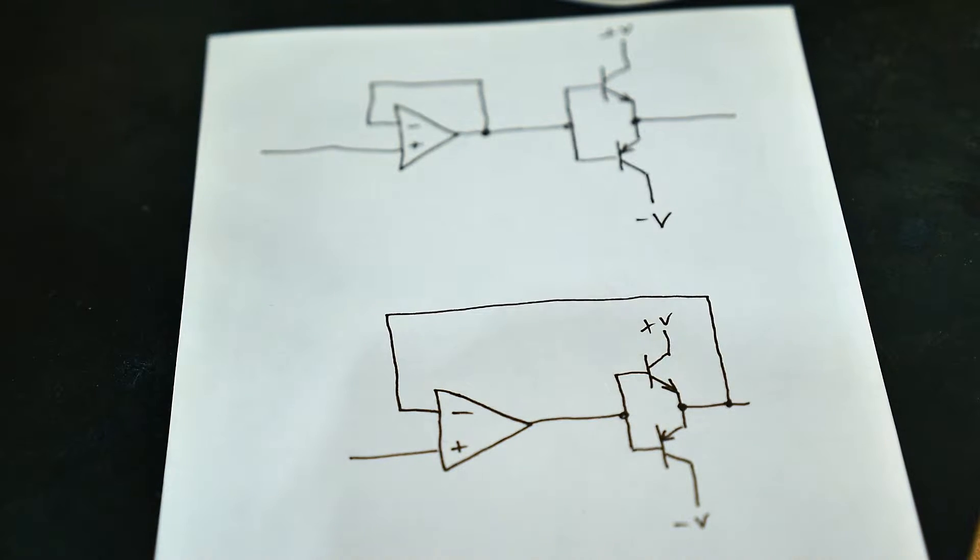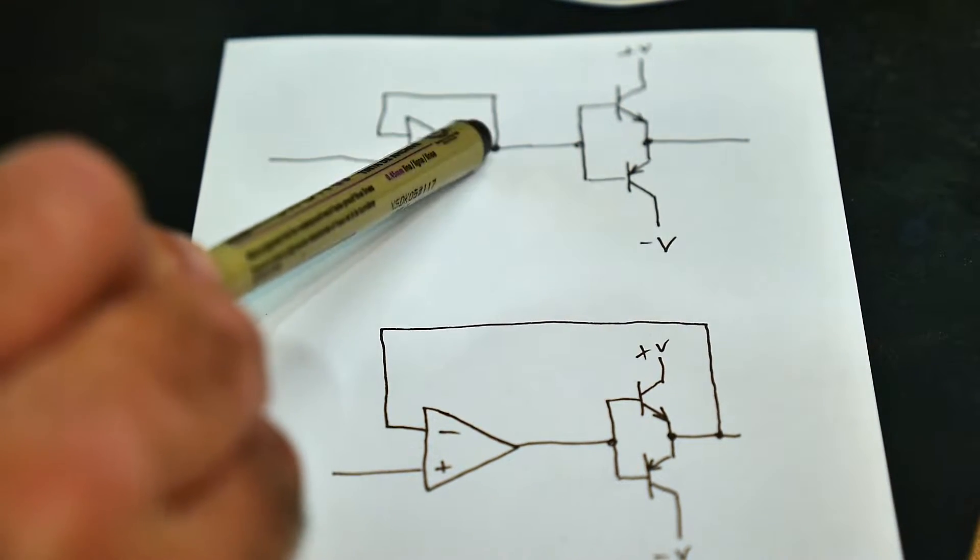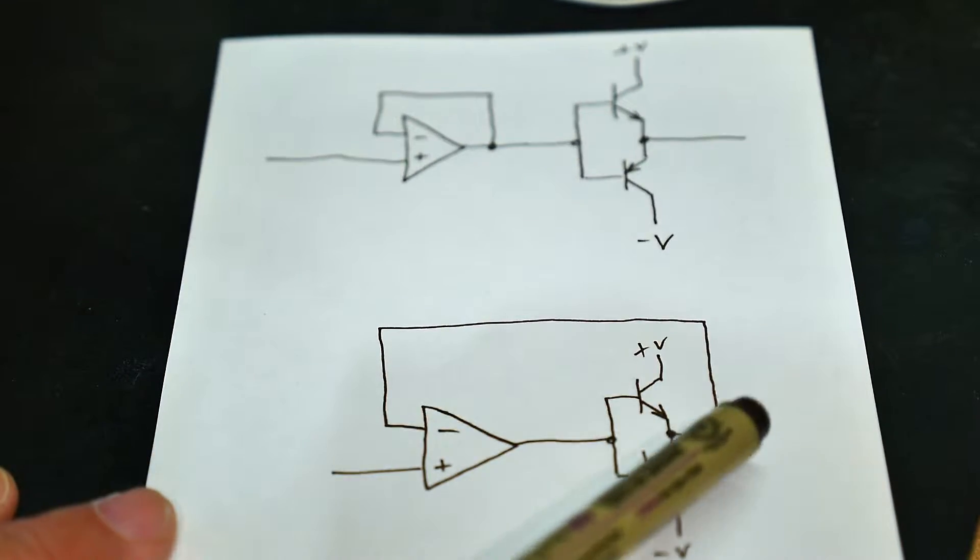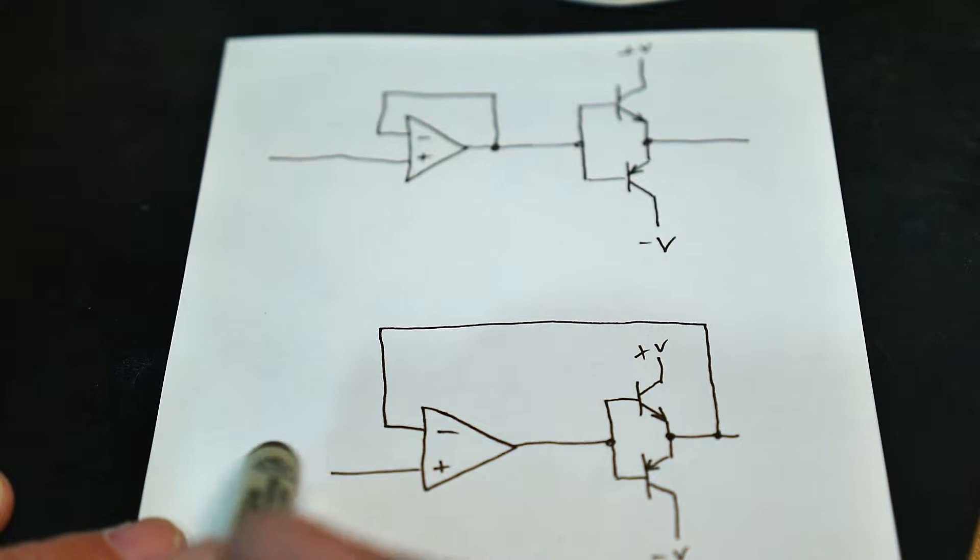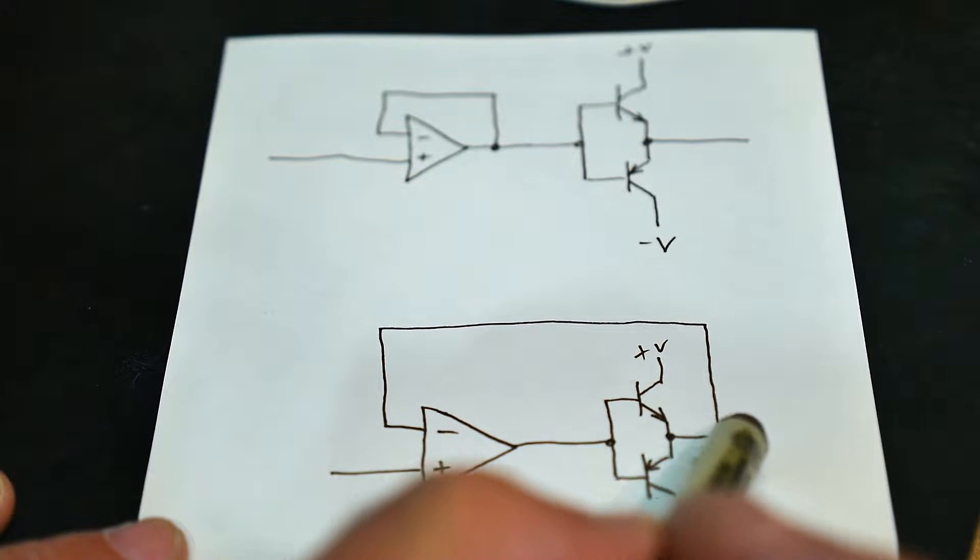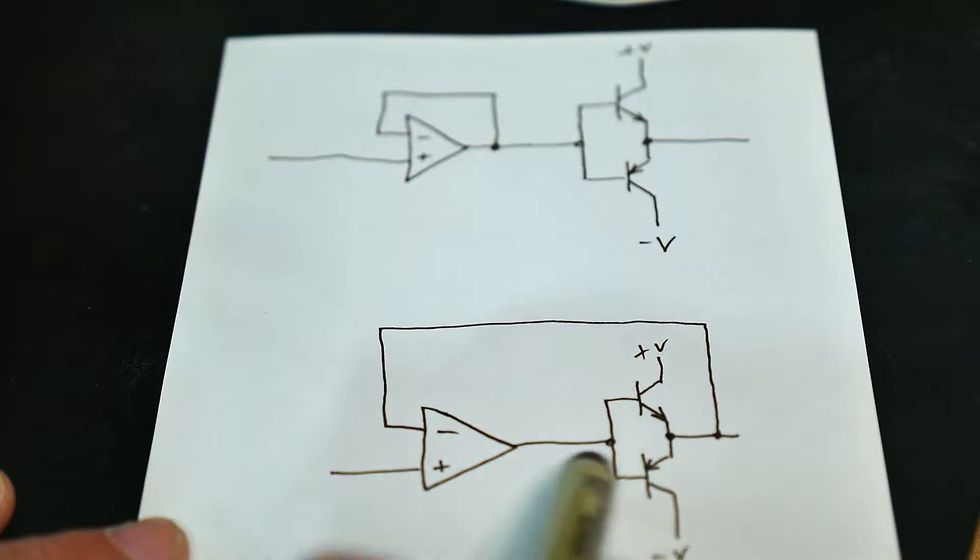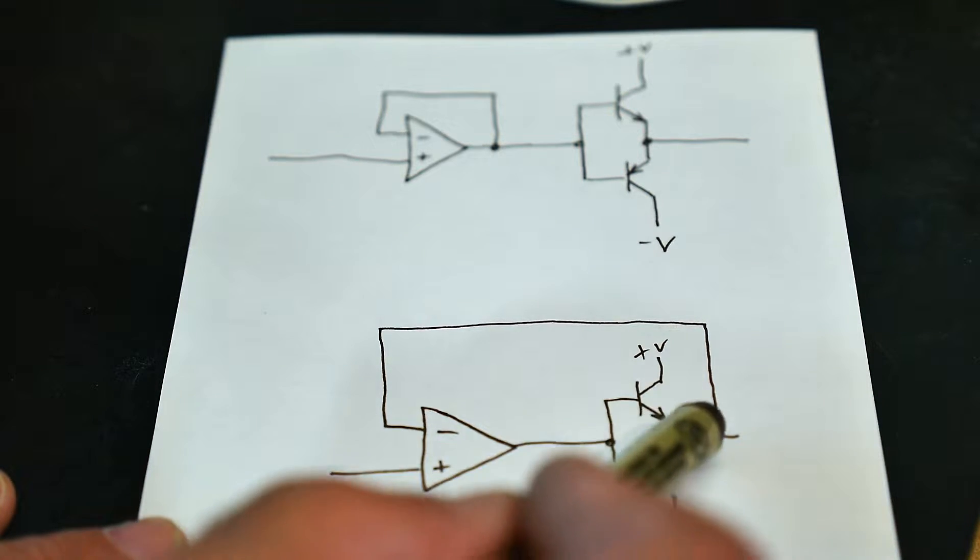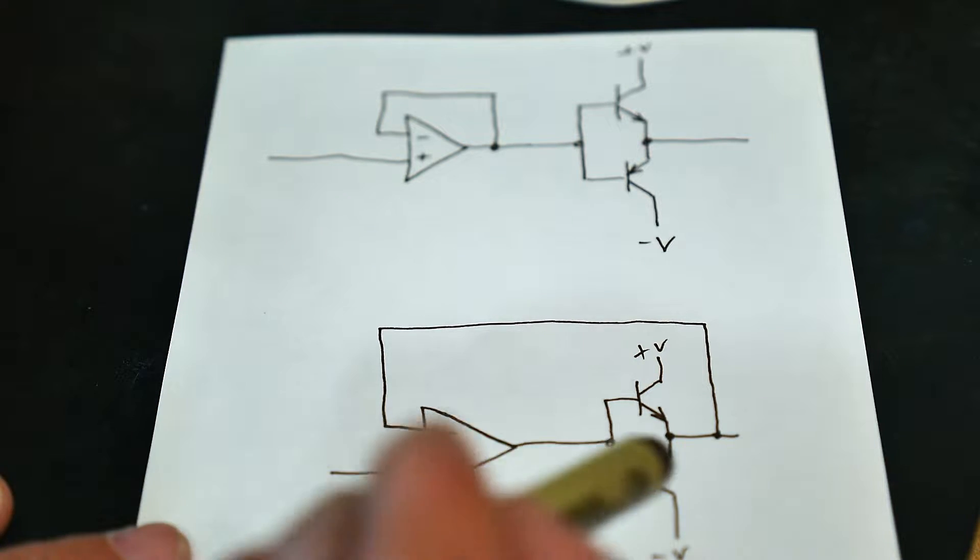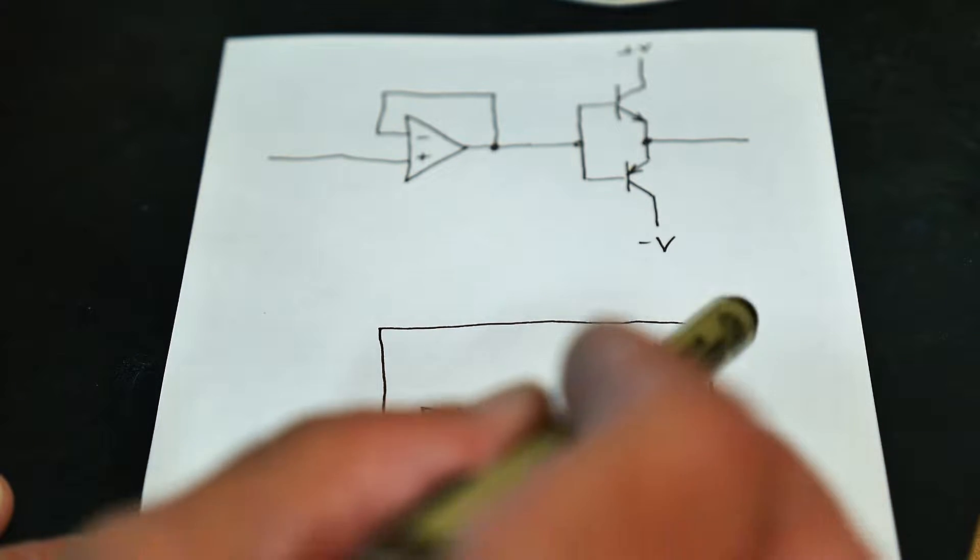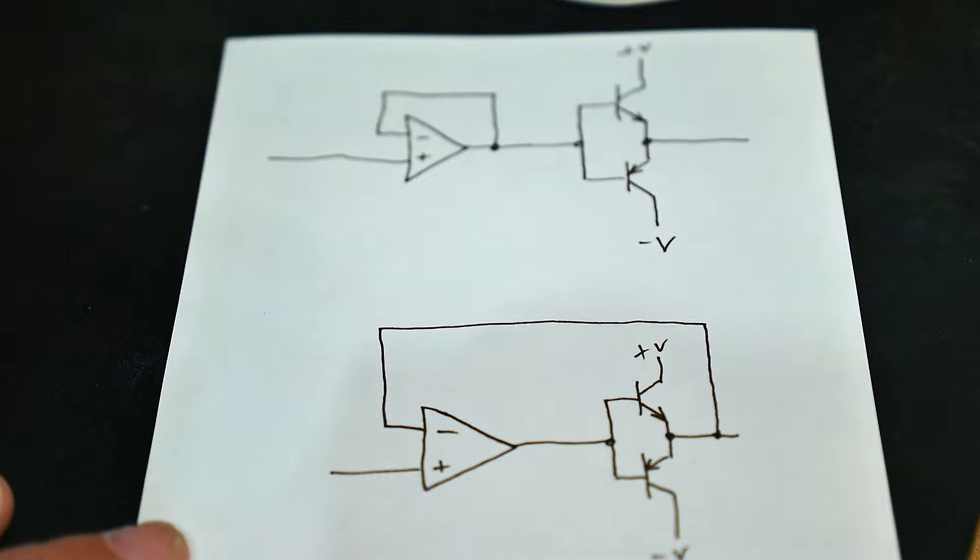So instead of putting the feedback here, bring the feedback all around this whole section. So again, whatever happens on the input must happen on the output. This circuit will do all of that and by bringing this feedback path around you can eliminate all of the distortion of this section. So use the feedback to your advantage.